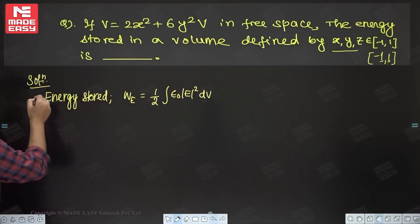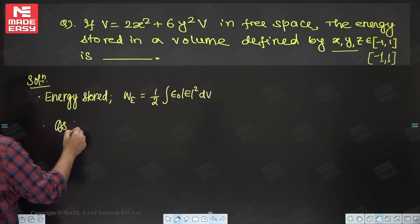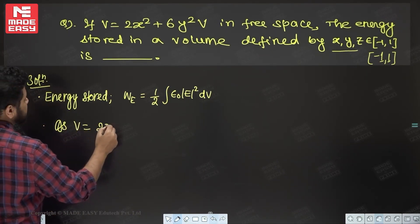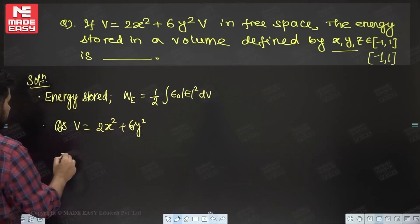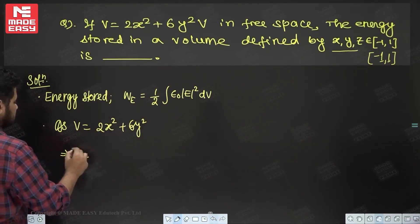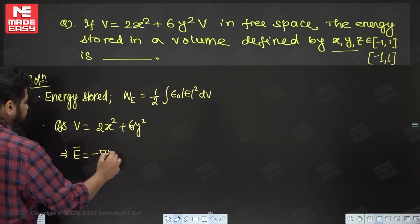As potential V is given as 2x² + 6y², how will you find the electric field? E is given as minus del V. So minus del V means minus of...